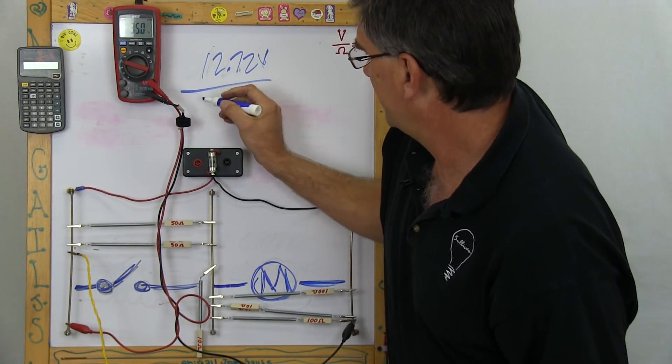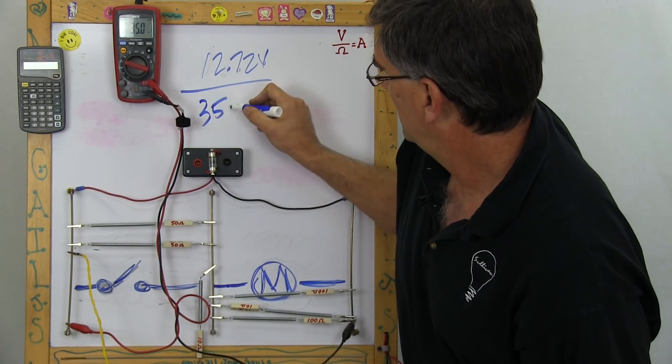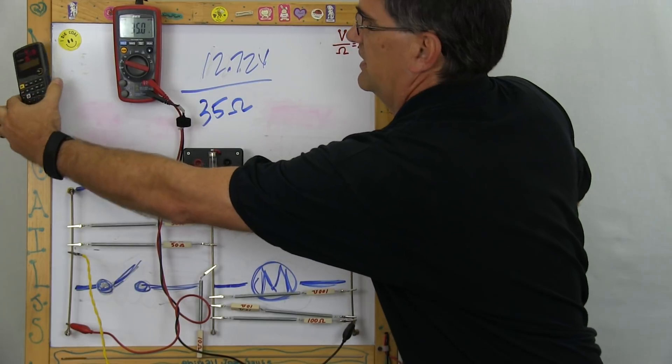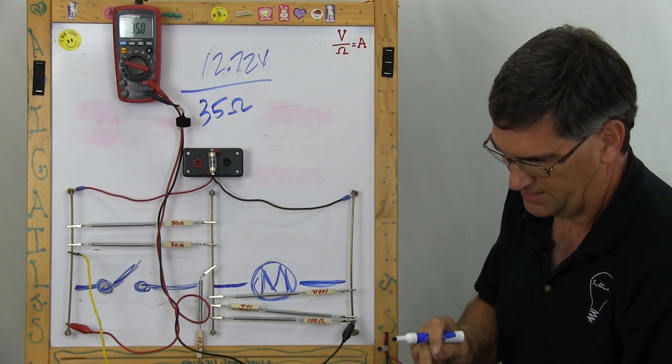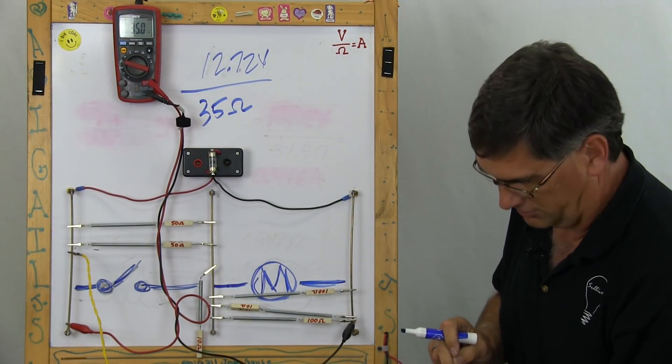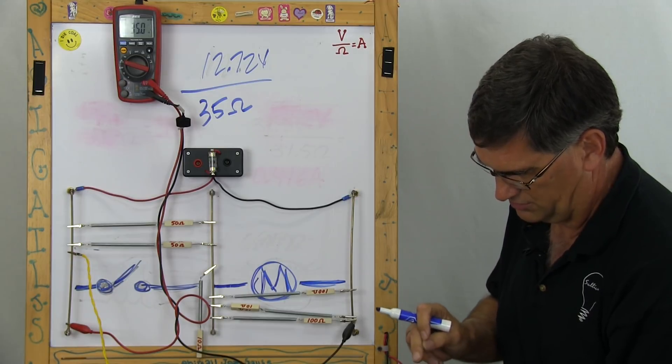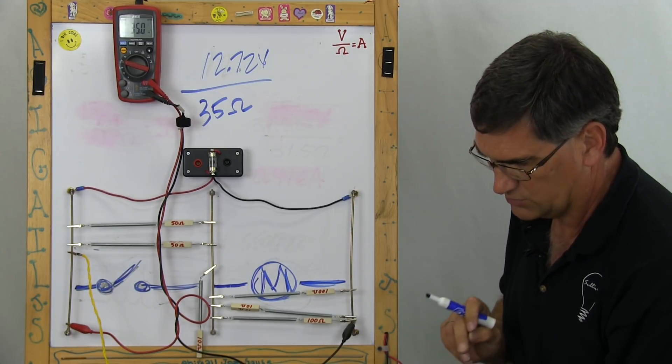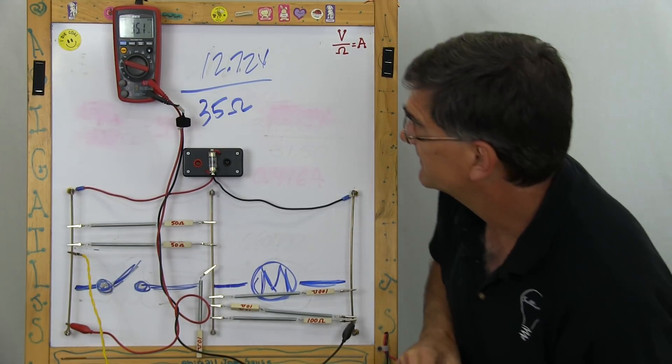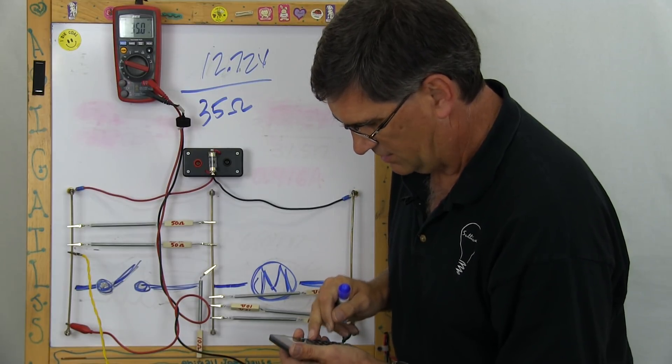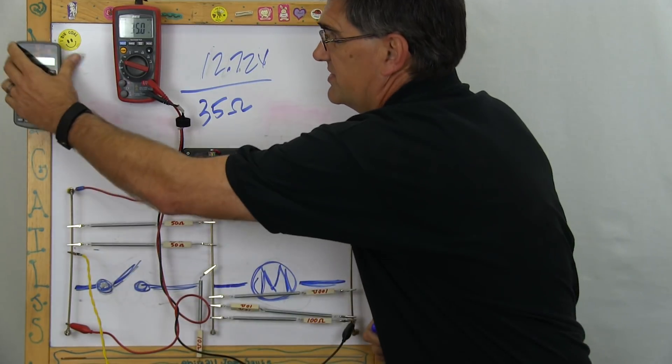So I can write my 35, and then I would take the calculator, and I would do 12.72 divided by 35 equals .363. Always double check.